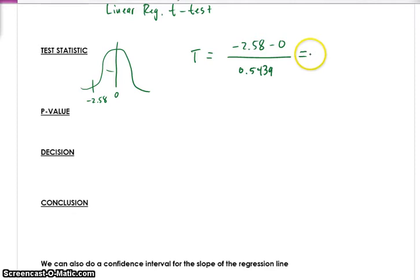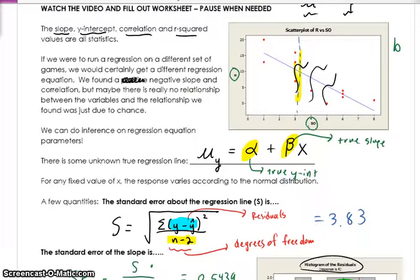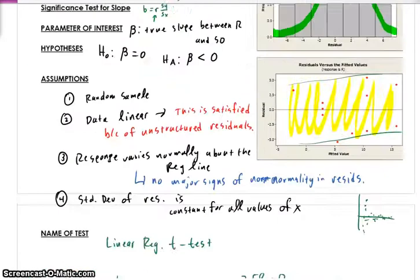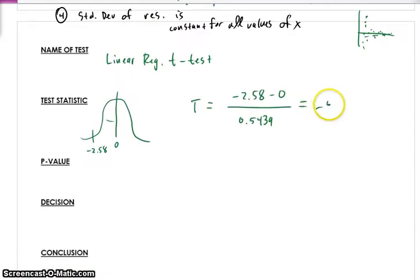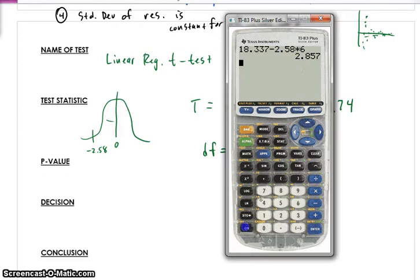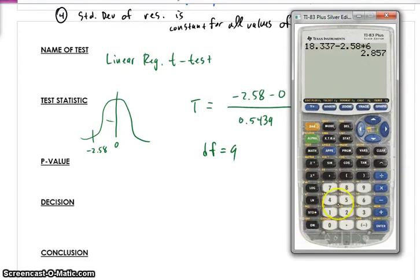Compute that. And what you'll find is that it's equal to negative 4.74. So actually, they gave us that. Negative 4.74. The degrees of freedom is 9 because we've played 11 games. And it's n minus 2. So if we want to find the p-value, we're going to use the t-model.